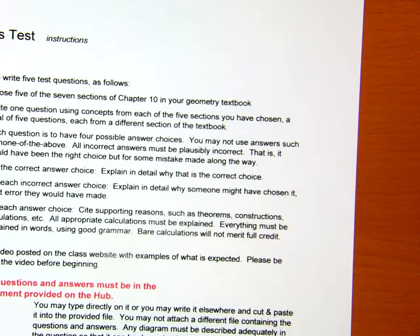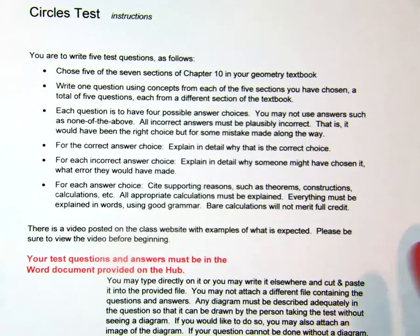Each question needs to be primarily on one section. You know that it's going to be stuff from all over the place in your answer or how you show that it's the correct one, but the primary focus of the question needs to be from one of the seven sections of chapter 10. You need to determine which one you want. Pick five, skip two. If you want to do all seven, I'll take the best five.